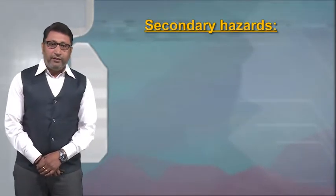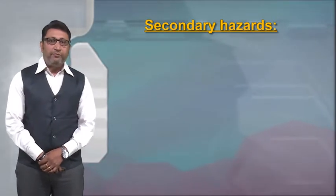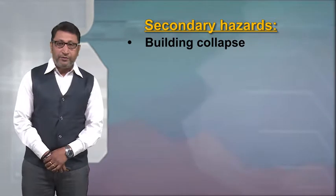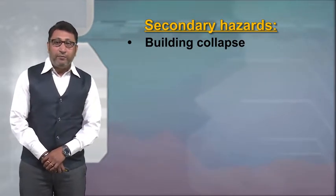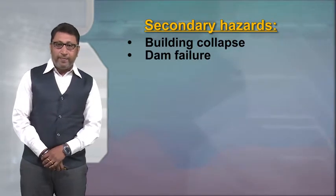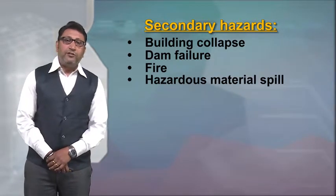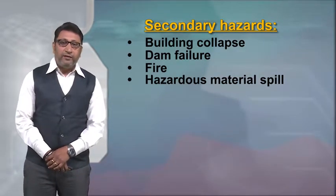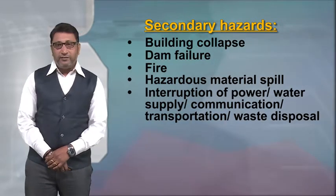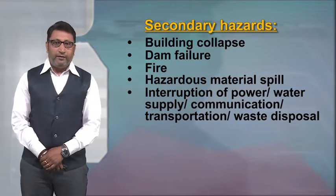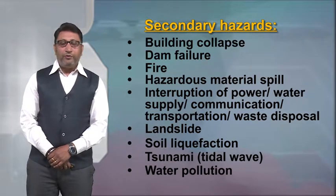Moving ahead with secondary hazards — hazards which are correlated with some primary natural hazards — like building collapse due to earthquake, flood or tsunami; dam failure because of excessive rain; fire; hazardous material spills; interruption of power, water supply, communication, transportation and waste disposal; landslide; soil liquefaction; tsunami; and water pollution.